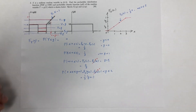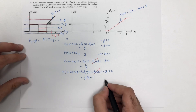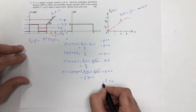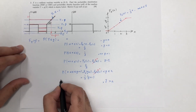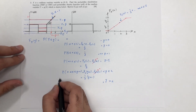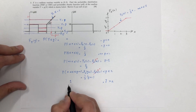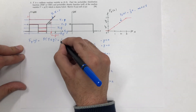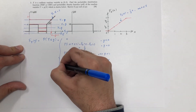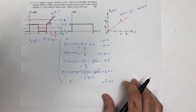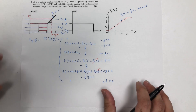The last case is trivial: when y is greater than 2, the distribution function is just 1. So we have now computed the full distribution function for y.